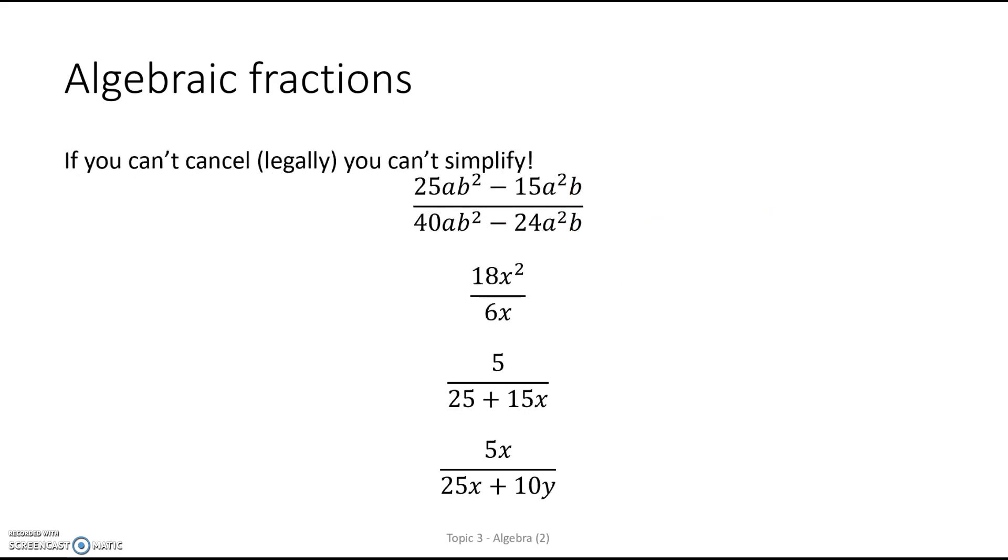Remember, if you can't cancel legally, you can't simplify. Right, on the top line, what's the highest common factor? Must be 5. In the A term, there's A, and in the Bs, it's B. So what have we got left? 5 times 5, we've got A times B, minus 5 times 3, A.